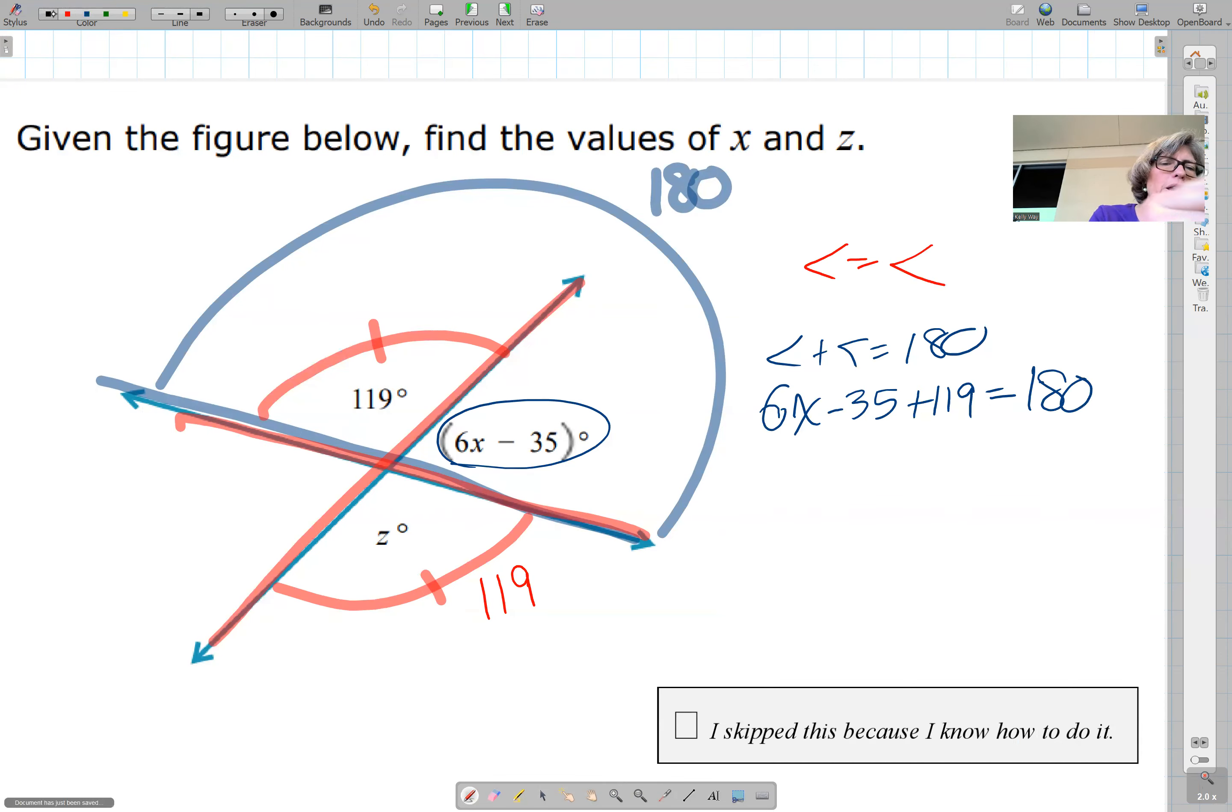For x, it's going to be angle plus angle equals 180. So circle plug chug, 6x minus 35 plus 119 equals 180. And you solve from there. Once you find x here, we're going to do 119 minus 35.